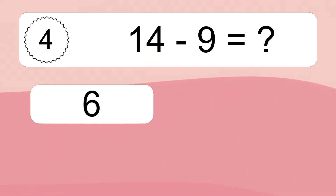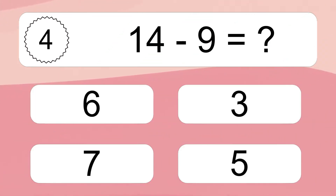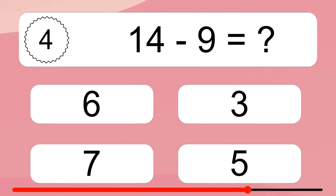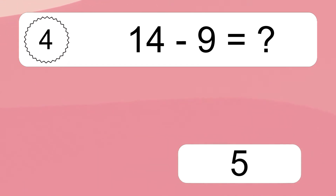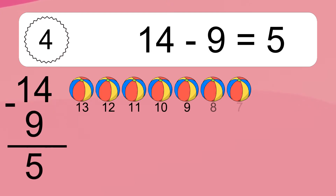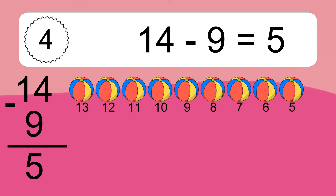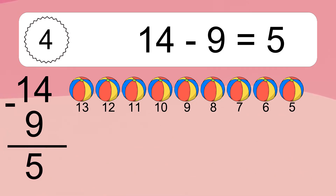14 minus 9 equals what? 14 minus 9 equals 5. Let's count it: 13, 12, 11, 10, 9, 8, 7, 6, 5.